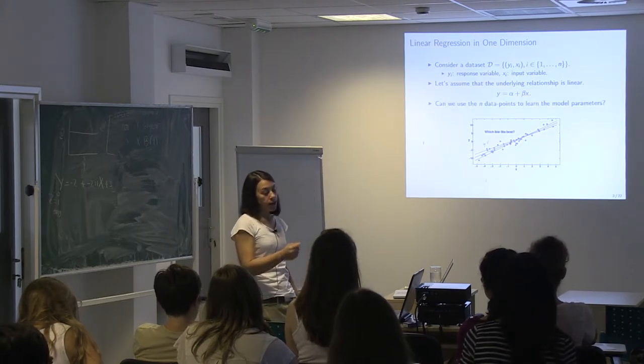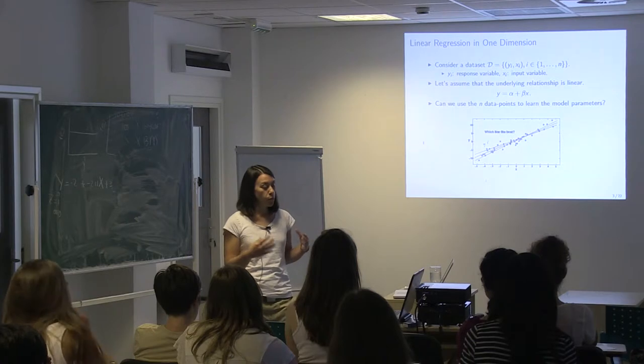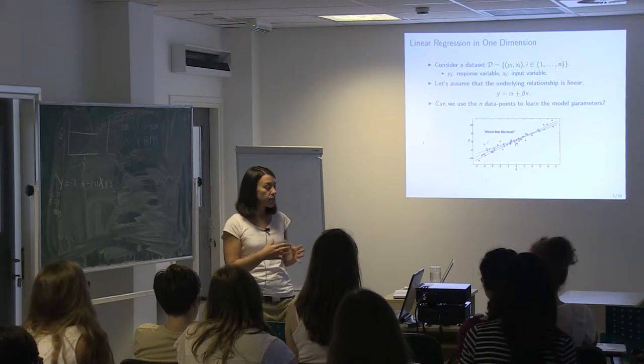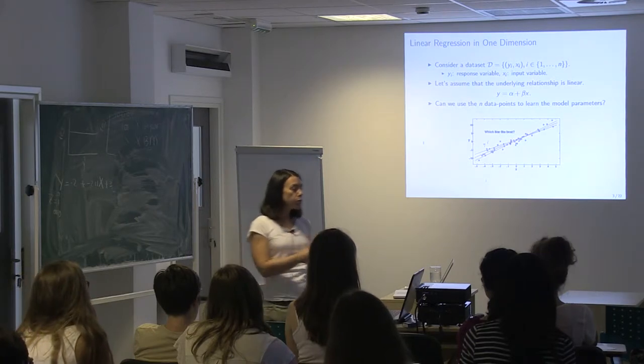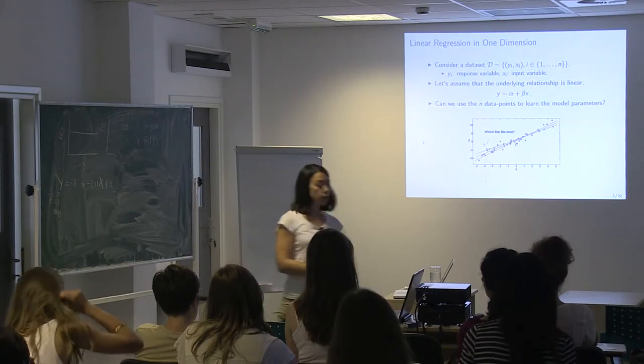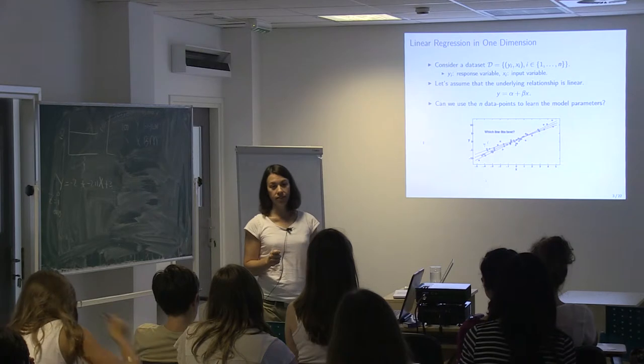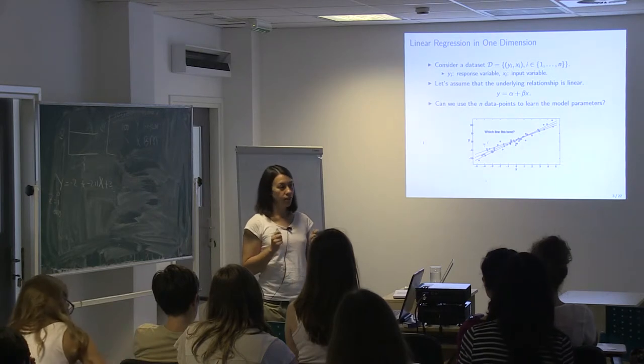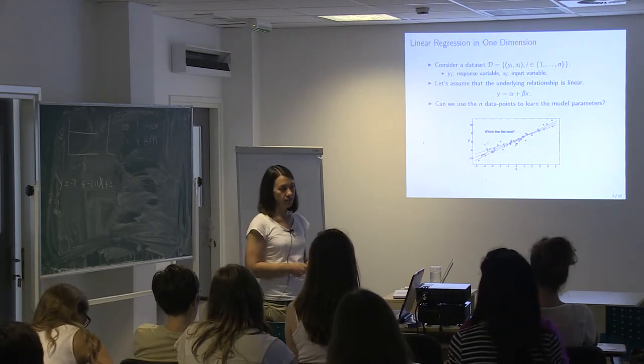Can we use these n data points that we have to actually learn — or estimate — the alpha and beta? We use different vocabulary in machine learning, but the concepts are exactly the same.